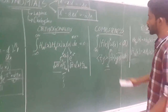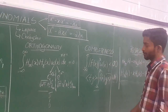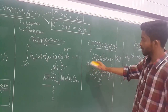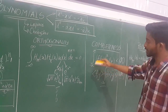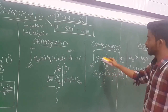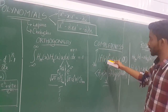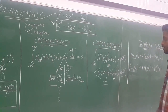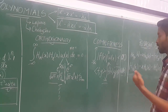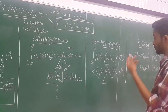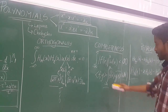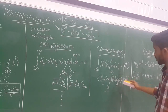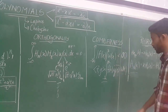Hermite polynomials also satisfy the completeness property, which states that the integral from minus infinity to infinity of |f(x)|² over a weighted function is less than infinity. The dot product of Hermite polynomials is equal to the integral from minus infinity to infinity of f(x) × g(x) times the weighted function w(x).